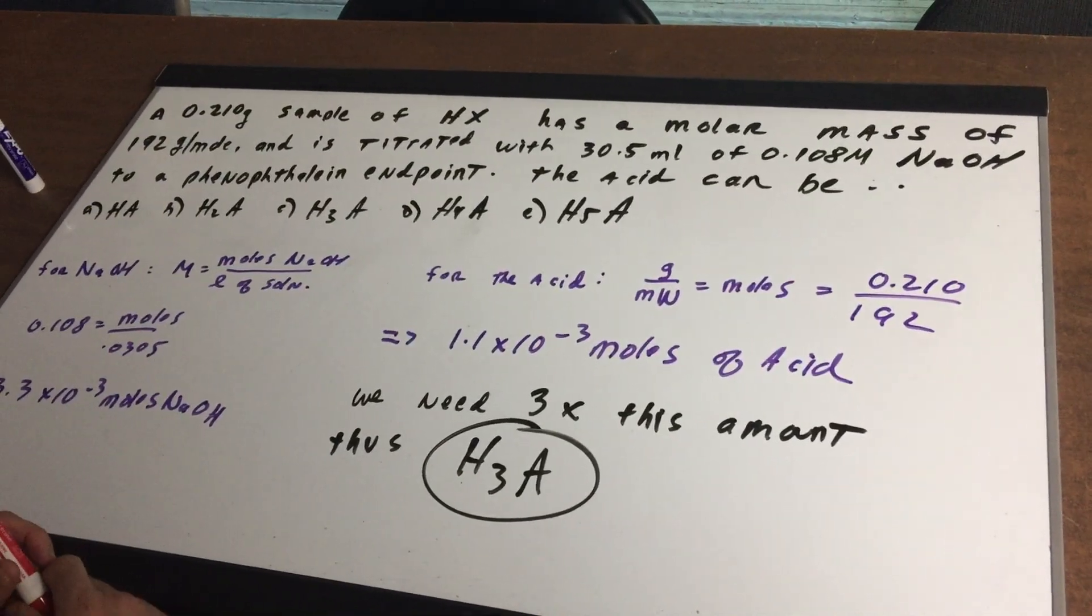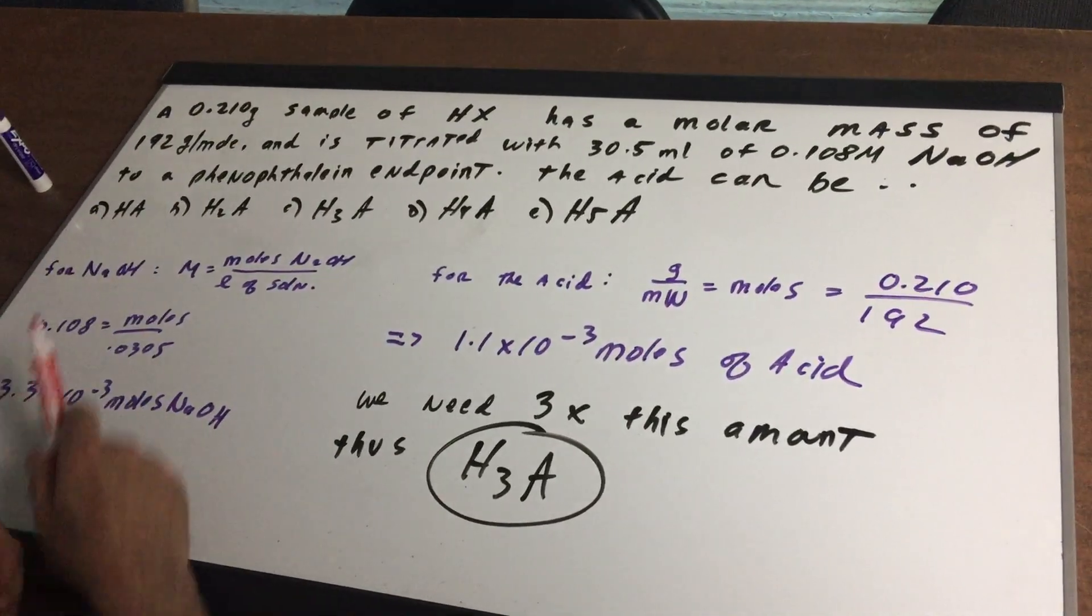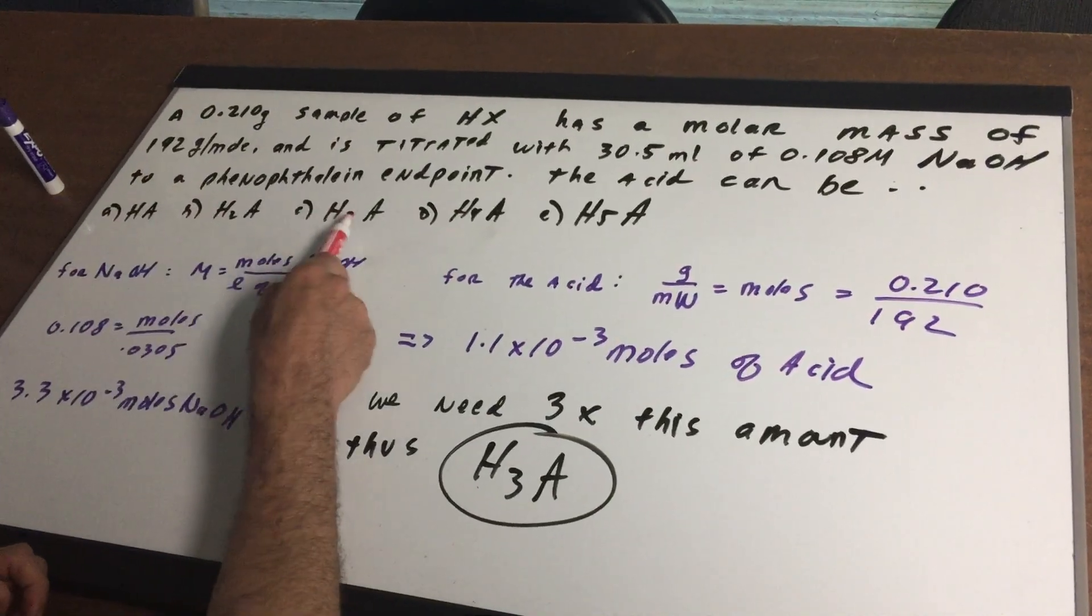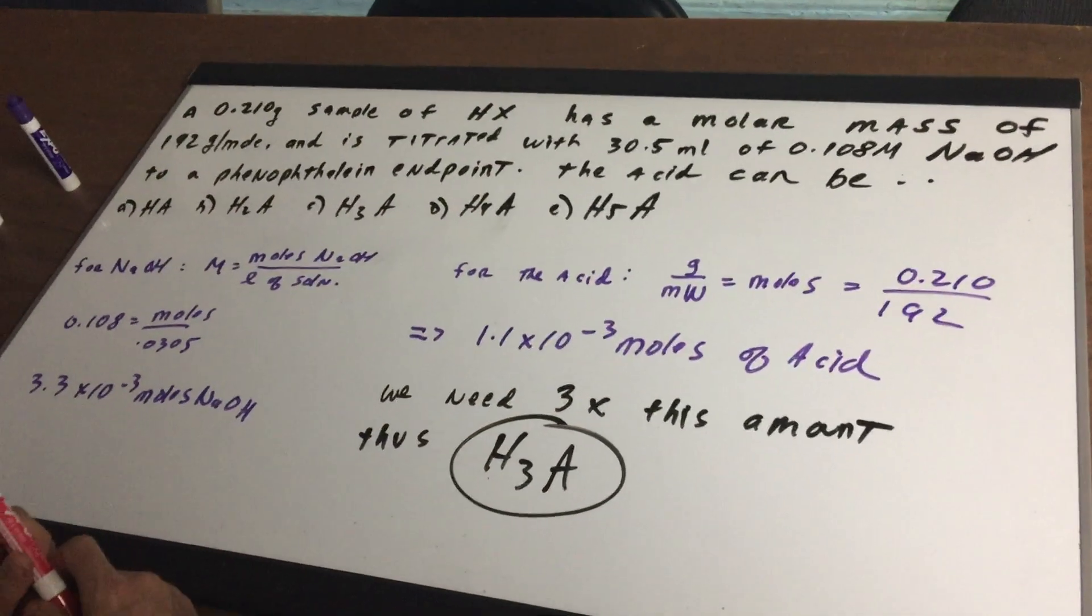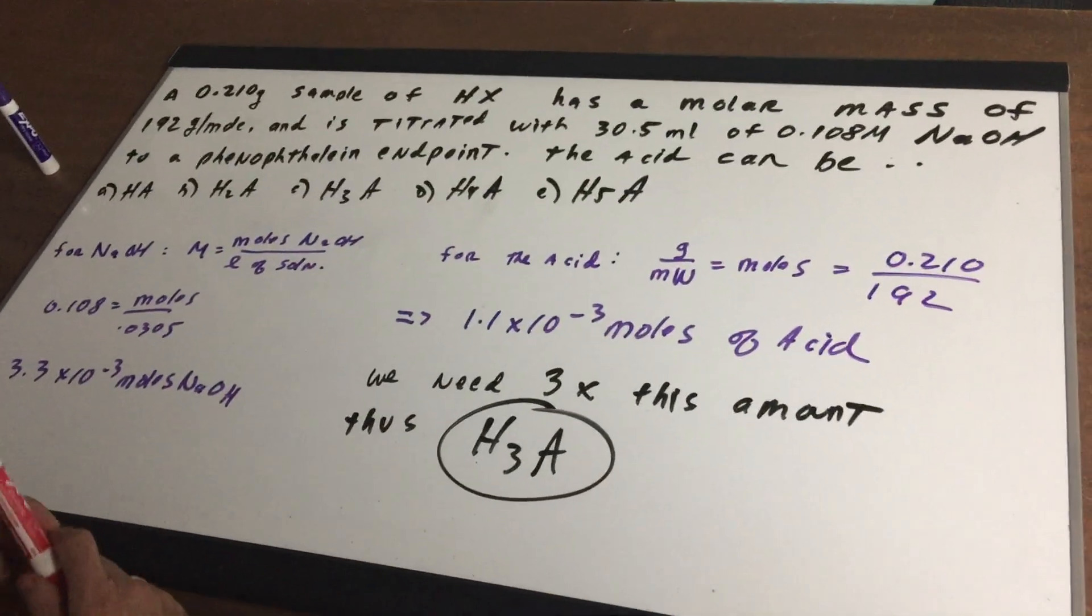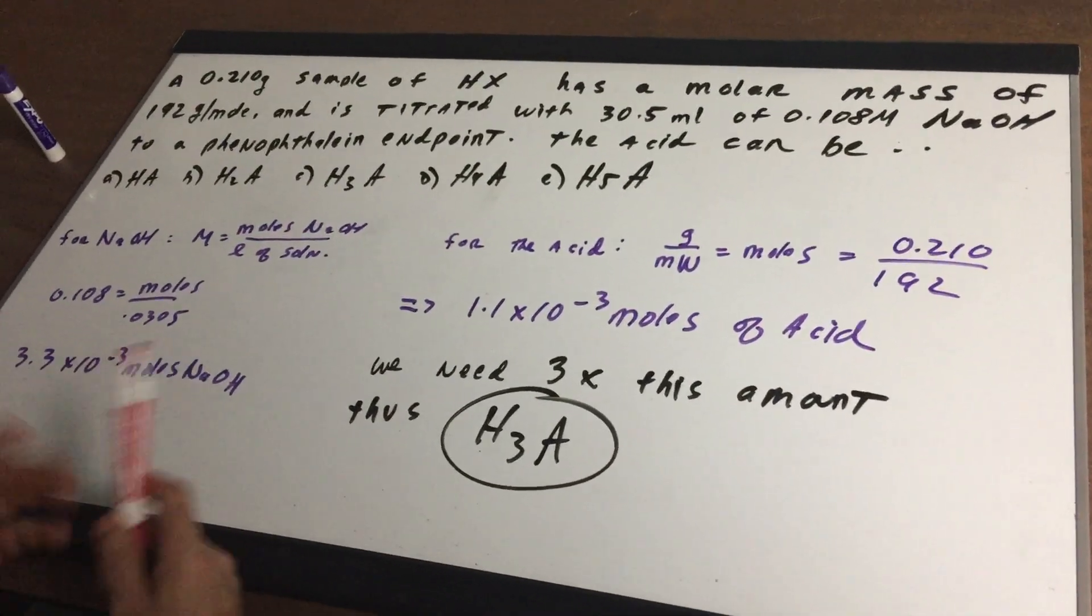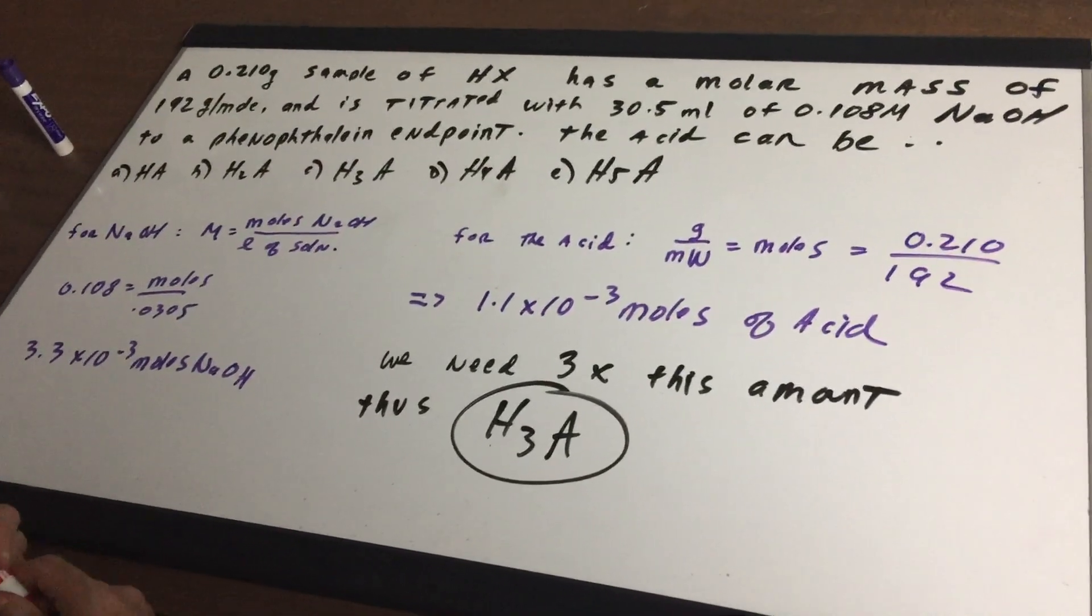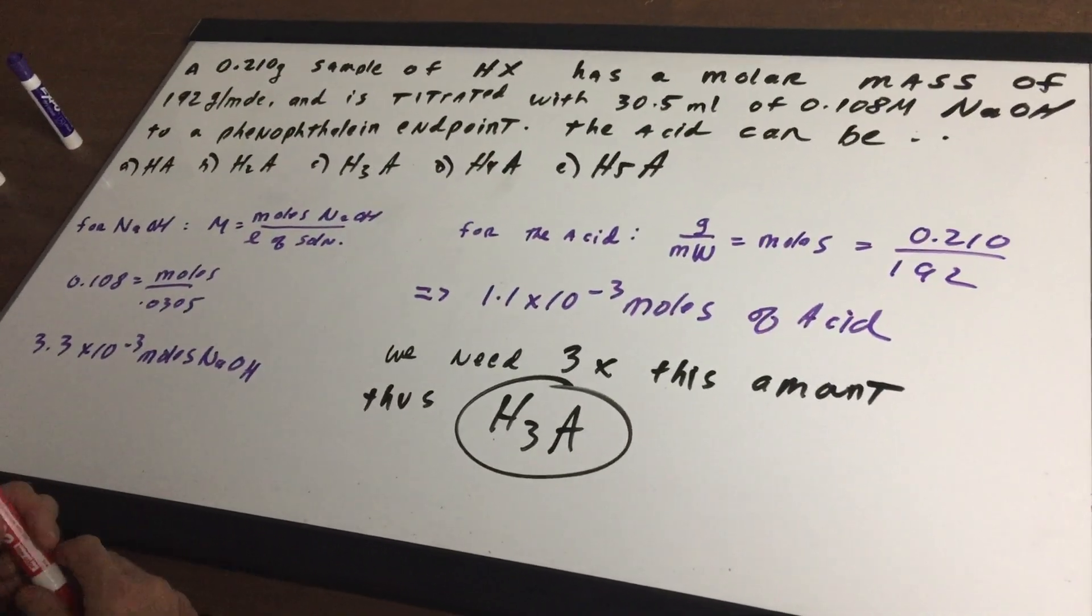And I want to know, what could the acid be? HA, H2A, H3A, H4A, and H5A. The first thing we want to do is when we reach the endpoint, which is approximately equal to the equivalence point, the moles of acid equals the moles of base.